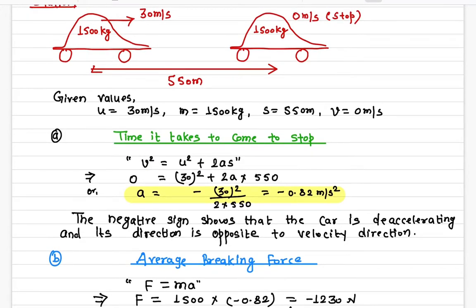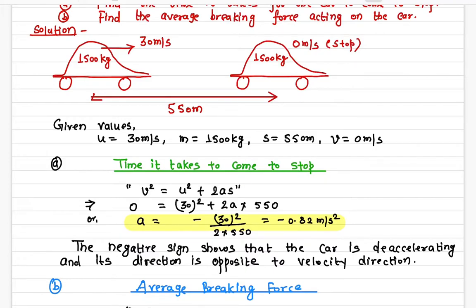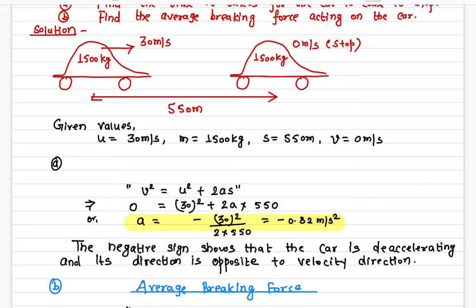Let's calculate the acceleration first. The kinematic equation I'm going to use is v² = u² + 2as. The final velocity v is zero because the car is at complete rest. The initial velocity u is 30 meters per second, a is the unknown acceleration, and the distance s is 550 meters. Solving for a gives negative 0.82 meters per second squared.